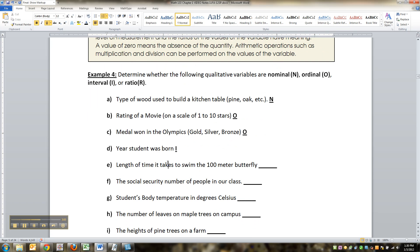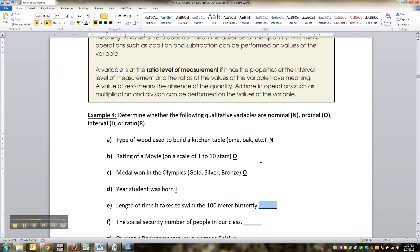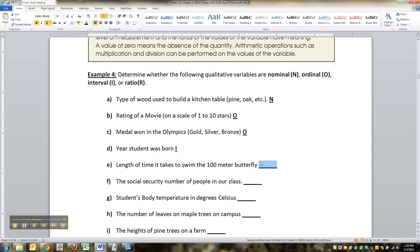The length of time it takes for you to swim the 100-meter butterfly. If I swim it in one minute and you swim it in two minutes, you know I'm a minute faster than you. So it's got order to it, it's got ranking. Is there a zero? If I can do that race in no time, what does that mean? It means something. Like the stopwatch never ran or whatever. So that's ratio.